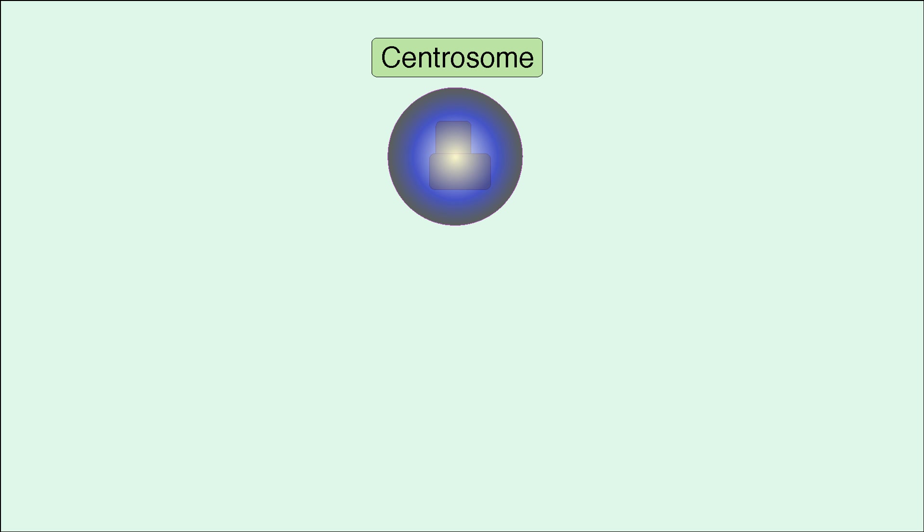The second main type of microtubule organizing center is the centrosome. Each centrosome contains two centrioles surrounded by pericentriolar material. This material is rich in gamma tubulin, providing templates for microtubule assembly.